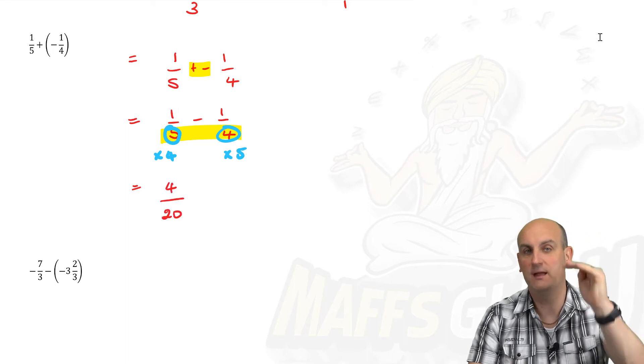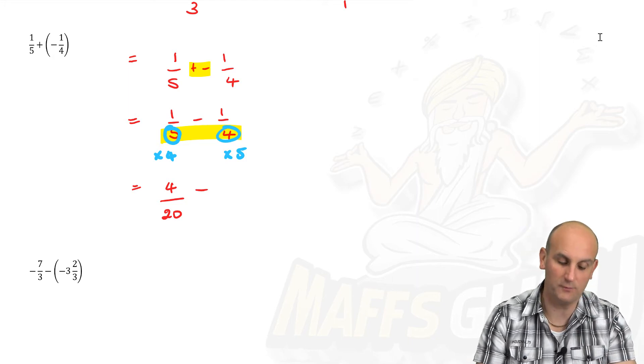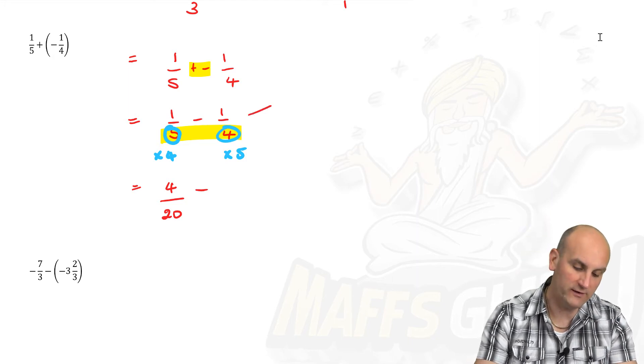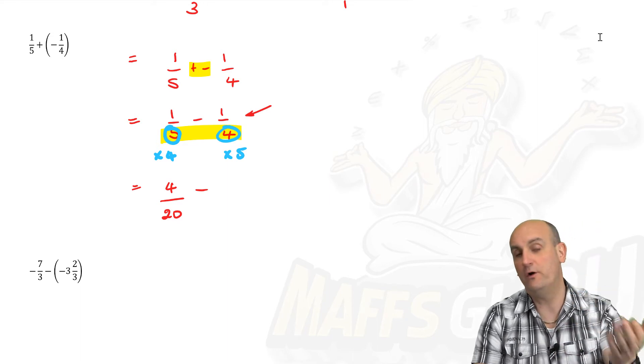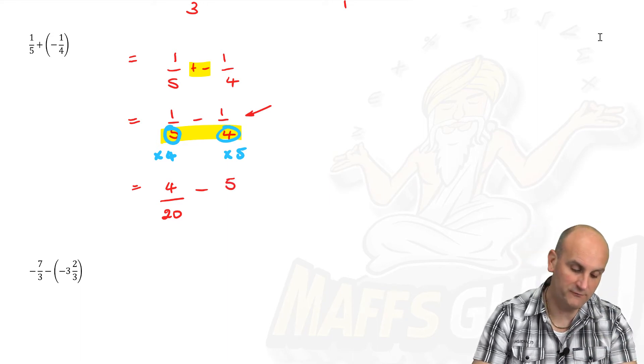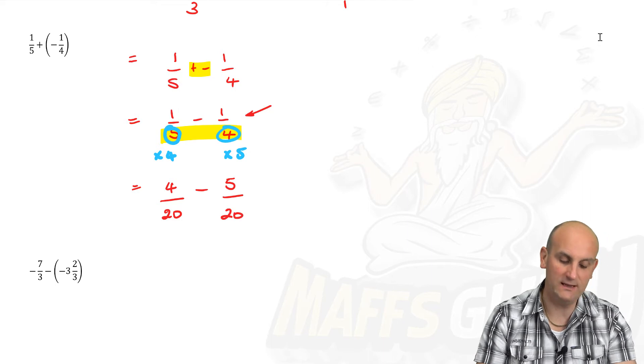So you have to multiply the top and the bottom by the four. We're going to do the subtraction sign, just copying it down. What are we doing to this fraction here? We're times in both the top and the bottom by five. So that becomes five on 20.